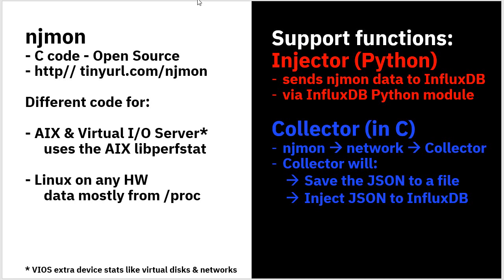The code is quite drastically different for AIX and Linux. The virtual IOS server is a copy of AIX with some extra packages in, so they'll support that as well. If you're actually running it on the VIO server, there's a whole load of extra stats for virtual disks, virtual networks, and shared storage pools. For AIX, we use a thing called the libperfstat library to get most of our stats.